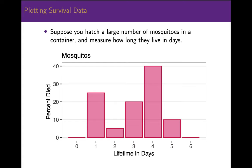To illustrate how we might create plots of survival data, consider the following simple example. Suppose you hatched a large number of mosquitoes in a container and measured how long they lived in days. You might draw a histogram of the percent who died each day, as shown in the plot above. 25% of the mosquitoes died the first day, 5% died the second day, 20% died the third day, and so on.